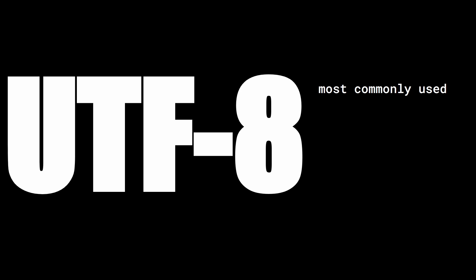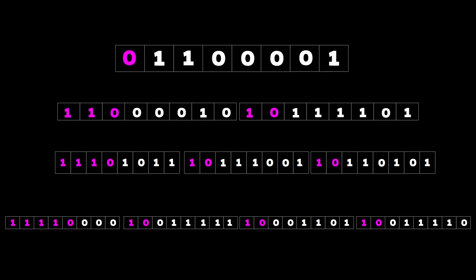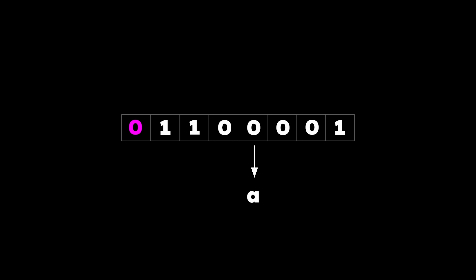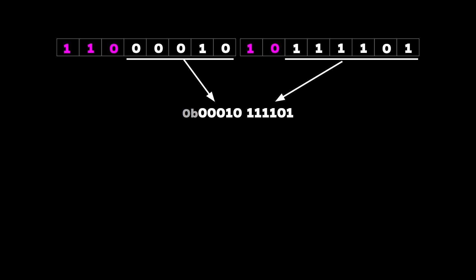UTF-8 is the most commonly used UTF encoding. Like UTF-16, it's a variable-length encoding where a character can be encoded with 1 to 4 bytes. UTF-8 is memory efficient and backward compatible with ASCII. To know how many bytes a character uses, UTF-8 defines bit patterns: if the first byte starts with a 0, only one byte is used and the remaining 7 bits encode the character — making it indistinguishable from ASCII. If the first byte starts with 110 and the second byte starts with 10, the character is encoded using 2 bytes, with the remaining 11 bits encoding the character.